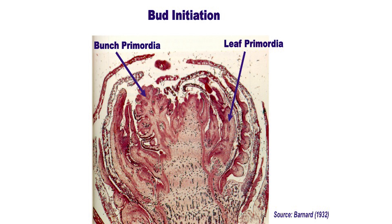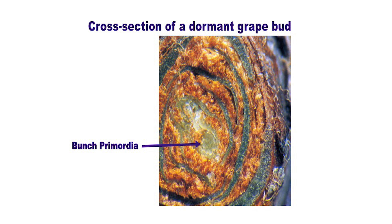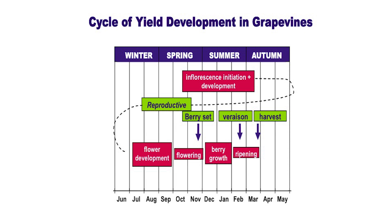Depending on the variety, the primary bud produces three to four leaf primordia and microscopic tissue called Anlagen. The Anlagen has the potential to produce either a bunch primordia or tendril primordia. The transition phase from Anlagen to bunch primordia is called inflorescence initiation and occurs about 14 to 16 months before the actual harvest. In Sunraysia vineyards, this is typically between mid-October to mid-December.